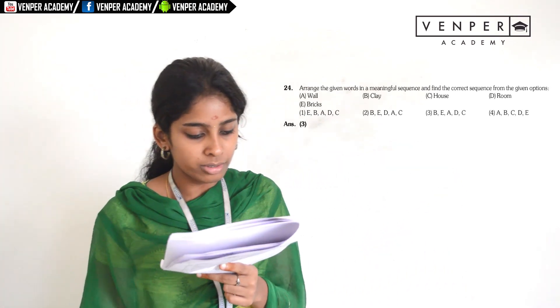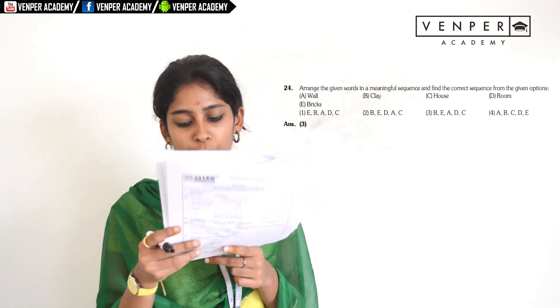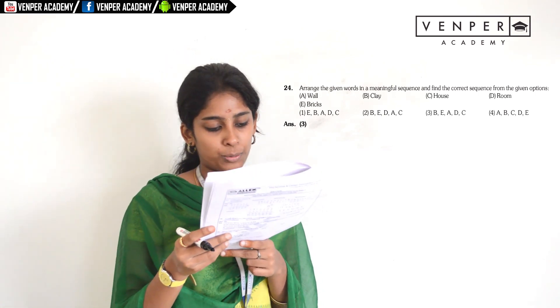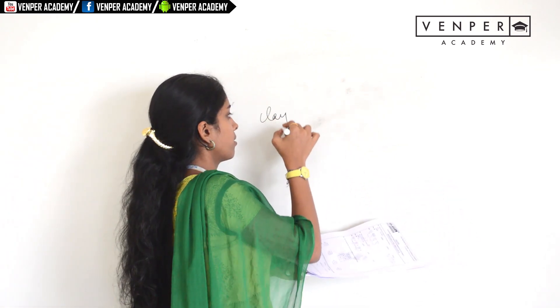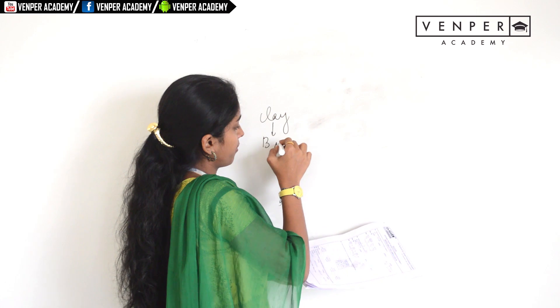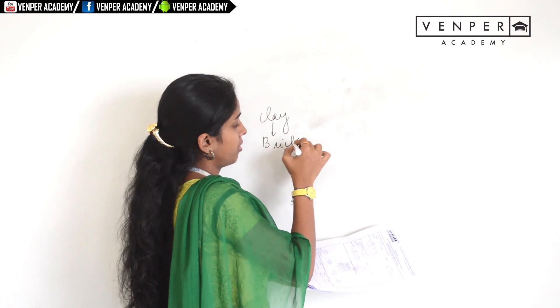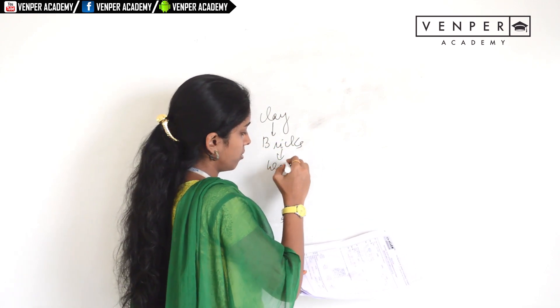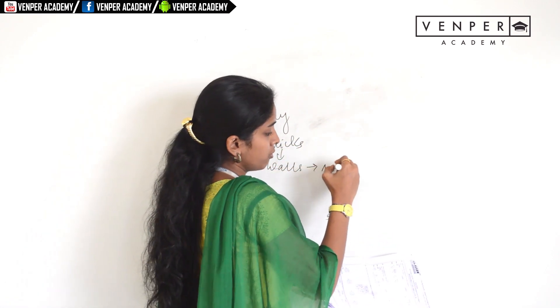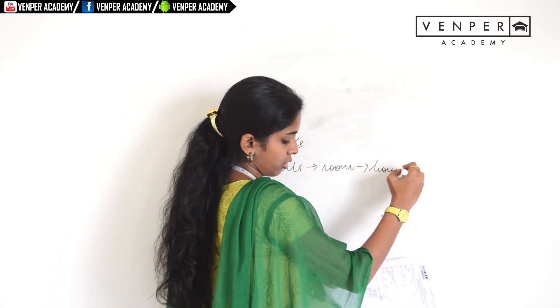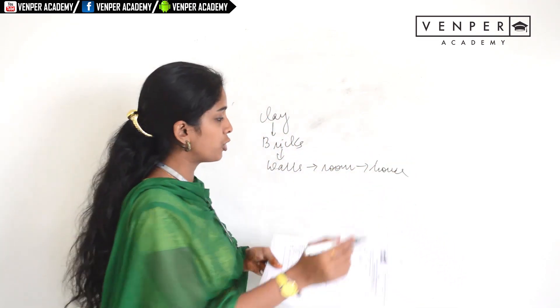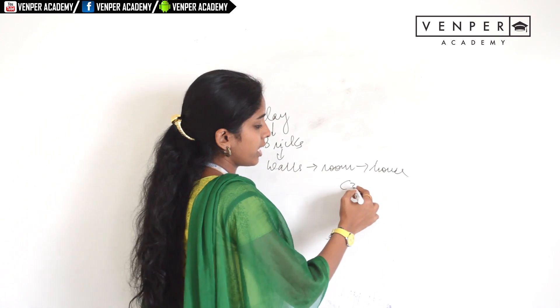Question twenty-four: arrange the given words in a meaningful sequence. The logical order is: clay makes bricks, bricks make a wall, walls make a room, and rooms make a house. So option three is correct.